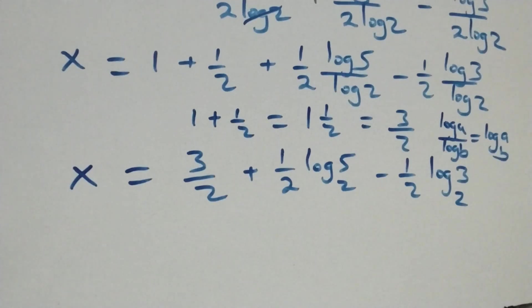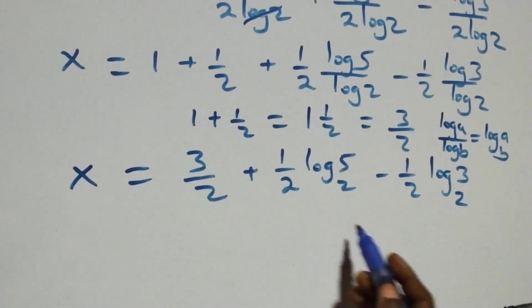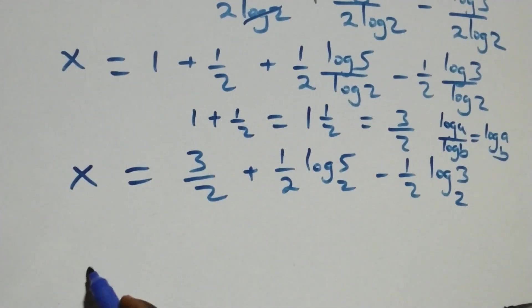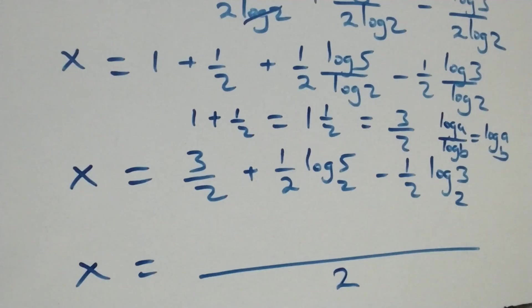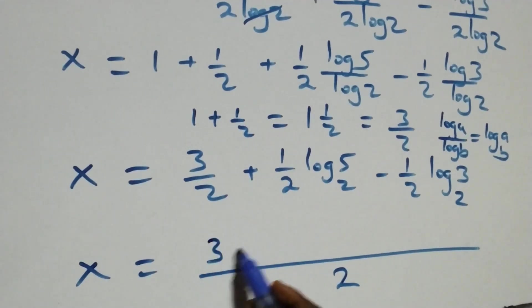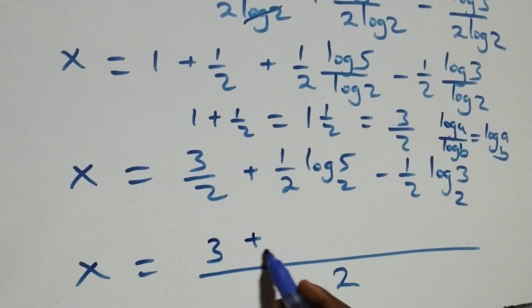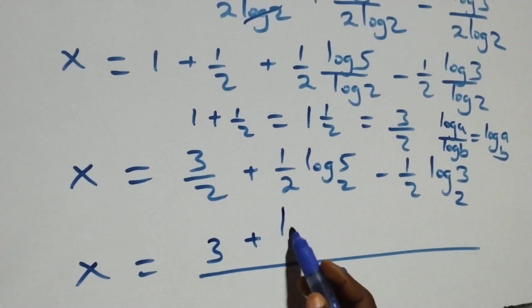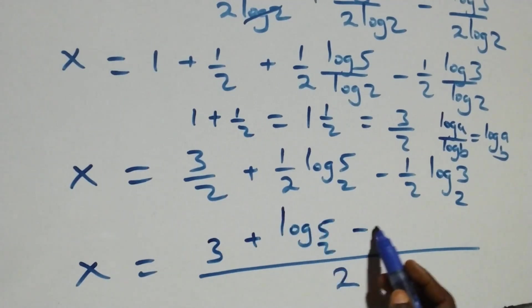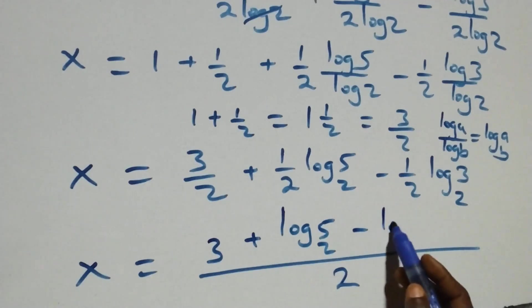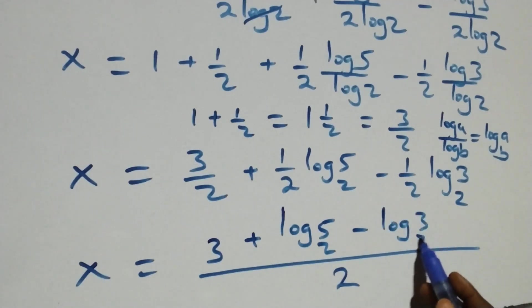We bring the terms together as a single fraction over 2, and we have x equals to 3 plus log 5 base 2 minus log 3 base 2, all over 2.